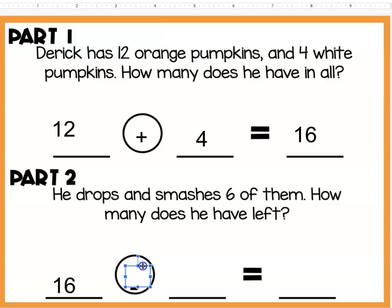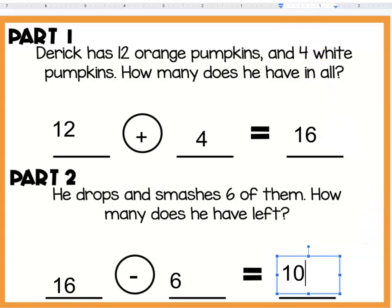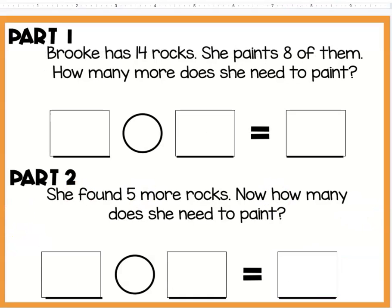The number that we're taking away from 16 is 6 because that's how many of them he smashed. We're putting 6 in this box. Now again, I can count back just like I can count on. So I'm putting 16 in my head, I'm counting back on six fingers: 15, 14, 13, 12, 11, 10. So my answer here is 10. Derek has 10 pumpkins left.